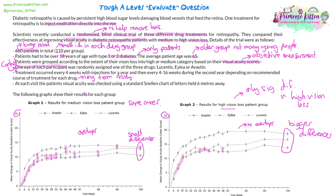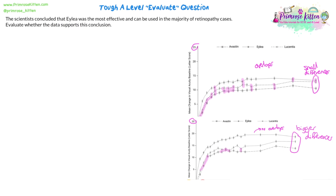So what we've concluded is that the mean change in visual acuity is greater in the high vision loss patient group than in the medium vision loss group, and that Ilea has a more likely significant increase in change than the other two drugs. The other two drugs are not really distinguishable from each other. Definitely, we've got a bigger increase in the high vision loss group. The scientists concluded that Ilea was the most effective and could be used for the majority of retinopathy cases — it's the word 'majority' here that's important, suggesting Ilea is best for all patients with diabetic retinopathy.